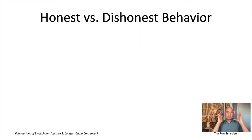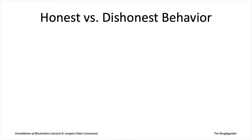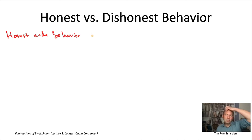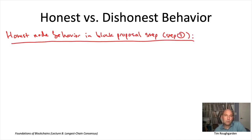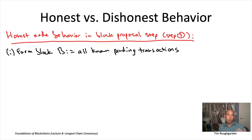Now that we understand longest chain consensus at a high level and the parameters of what nodes can and cannot do, let's talk about what honest nodes are supposed to do. Suppose an honest node finds itself selected as leader in some round — it's responsible for choosing a block and a predecessor.